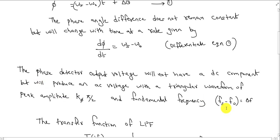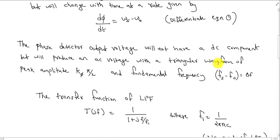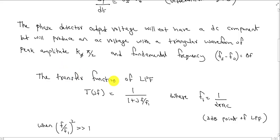The fundamental frequency is Fs minus F0, represented as delta F. In the phase detector output transfer function, we apply the low pass filter transfer function, which defines Vc. The transfer function of the low pass filter is T(jF), where F1 equals 1/(2*pi*RC). F1 is the 3dB cut-off frequency of the low pass filter. This is the transfer function of the low pass filter.